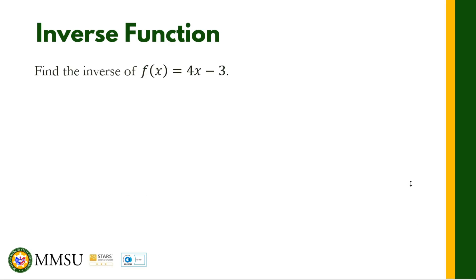Let's find the inverse of f(x) = 4x − 3. First, verify the function is one-to-one — this function is linear, so it is one-to-one. Step one: write it as y = 4x − 3. Step two: interchange x and y, giving x = 4y − 3.